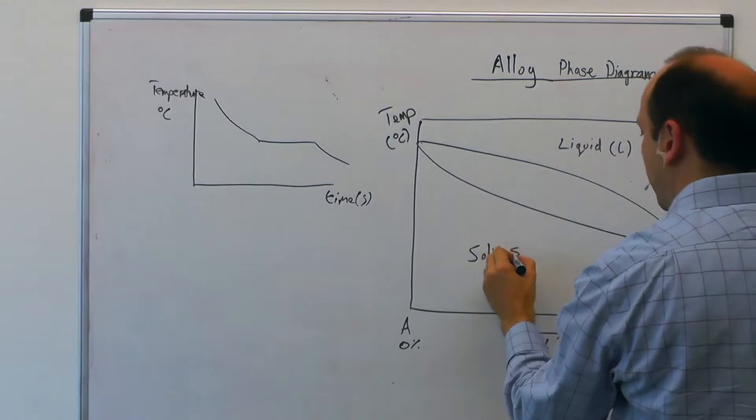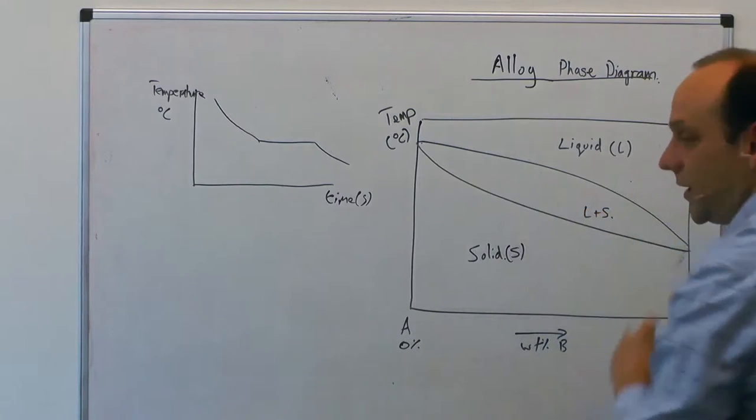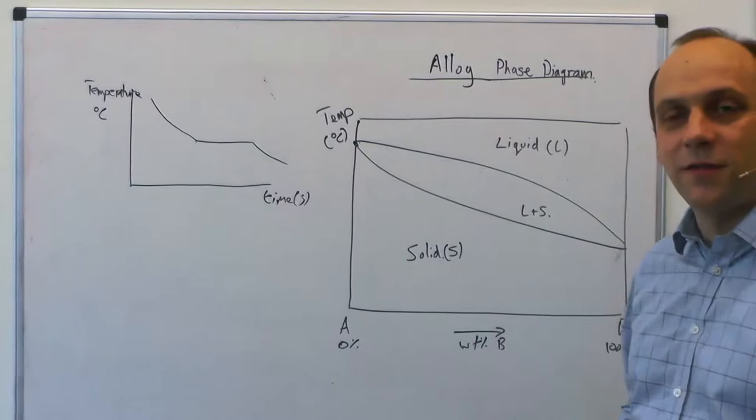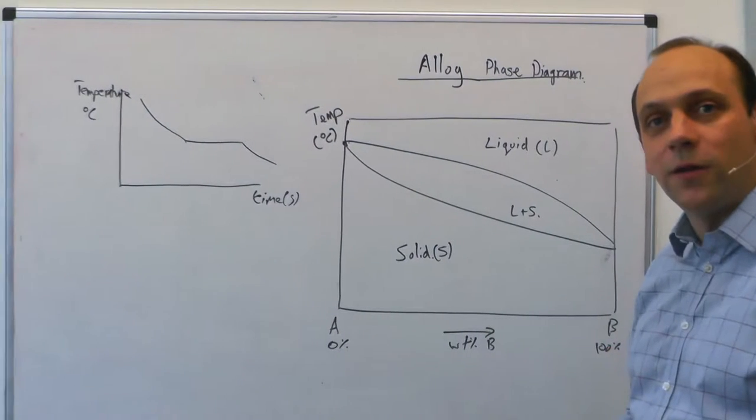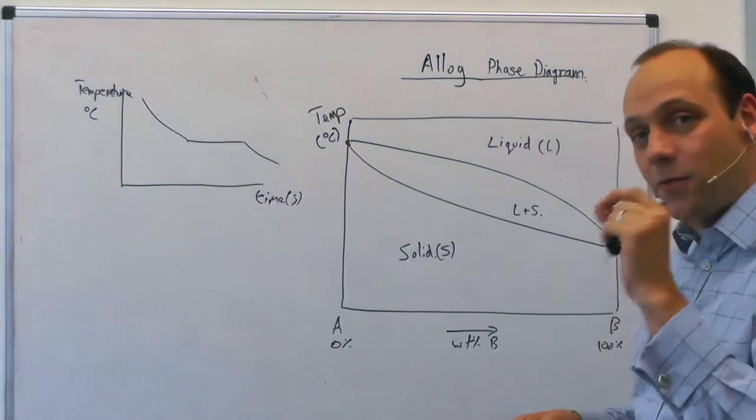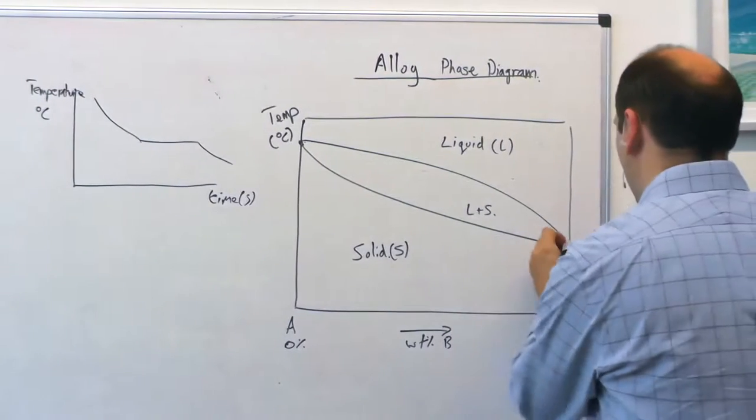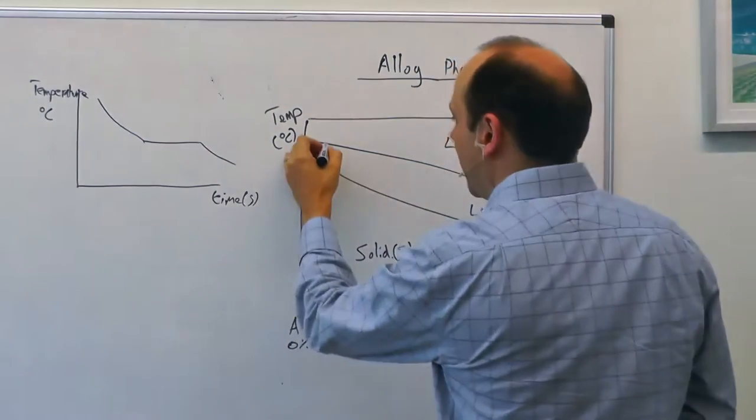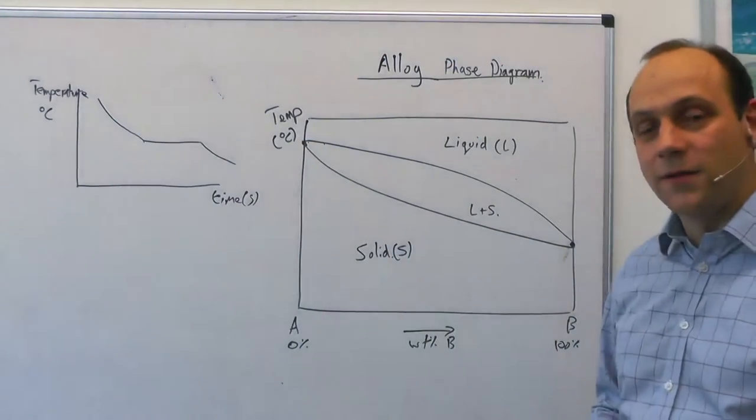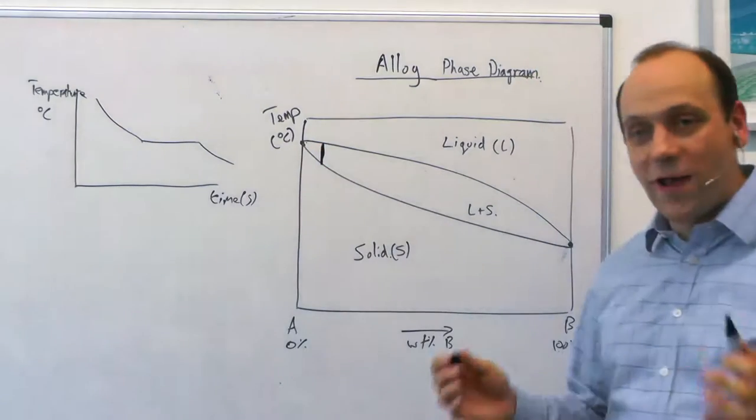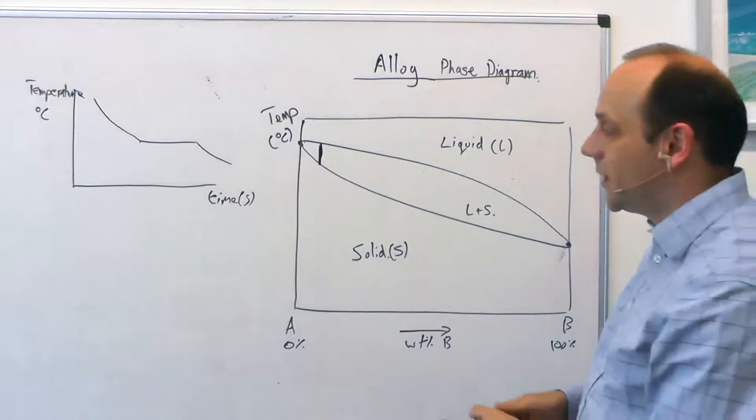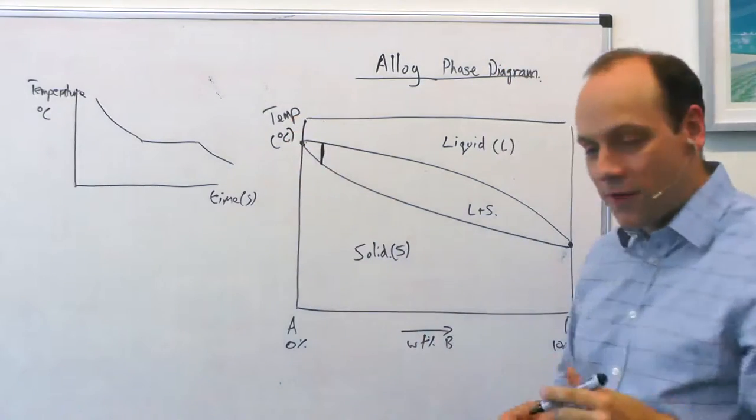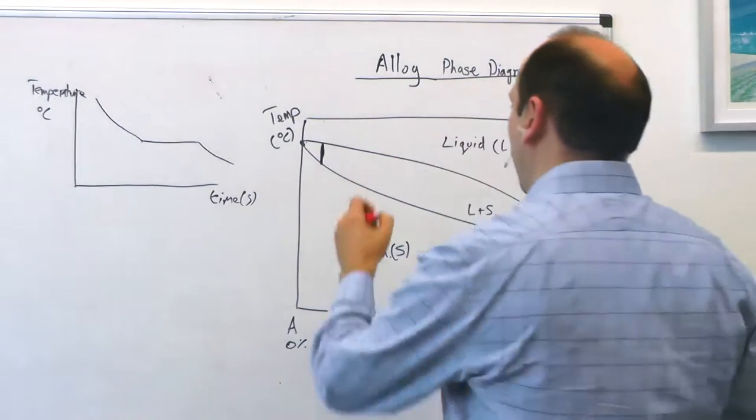If I take pure A, it solidifies at a single temperature characteristic of that element. Aluminum has a single melting point, single freezing point. Pure element B has a single freezing point. But if I add a little B to A, there's a region where you have a mixture of liquid and solid. We have a mixture of liquid and solid over a range of temperatures. Solidification occurs at a slightly depressed temperature.